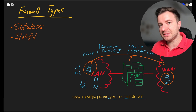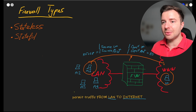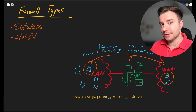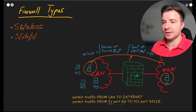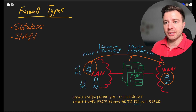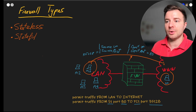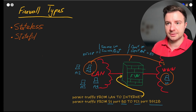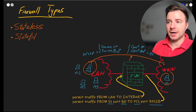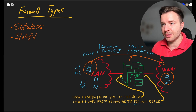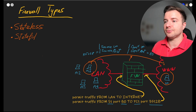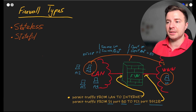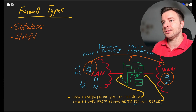Here's the key: we only need to configure that single outbound rule. When the firewall sees a connection initiated from a LAN PC to any internet destination, it automatically creates a dynamic return rule. So it will automatically permit return traffic from S1 on port 80 back to PC1 on port 35128 — whatever port was chosen when the connection started. The advantage is you only specify outbound rules; return traffic is automatically determined and allowed by the firewall.